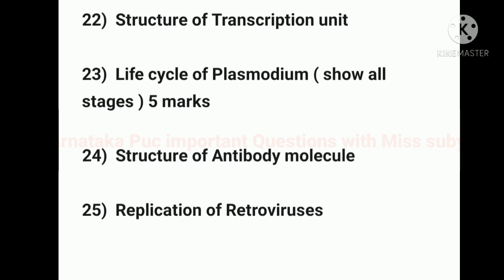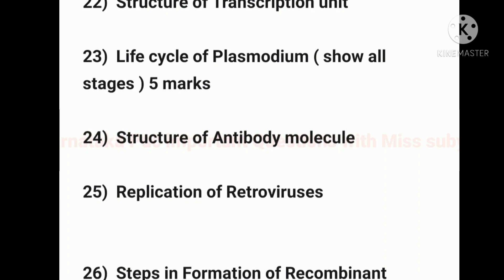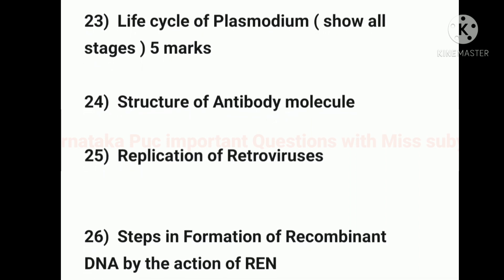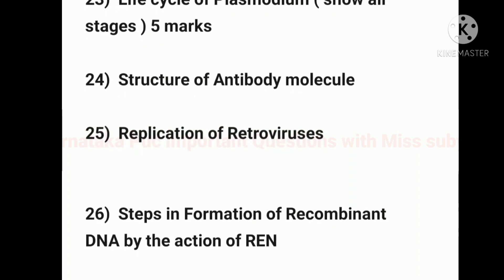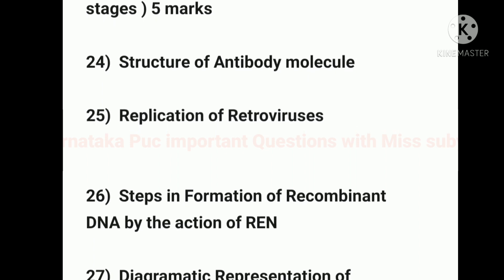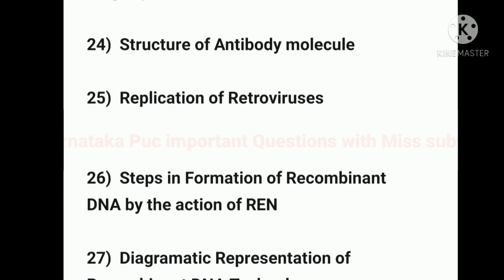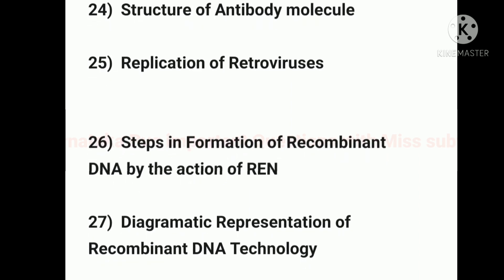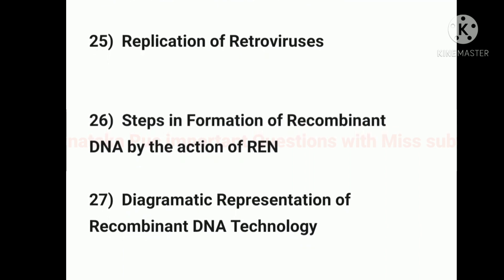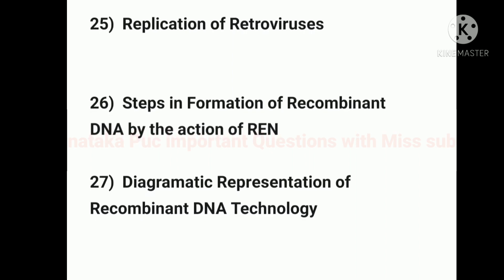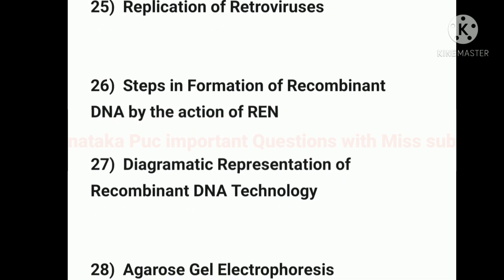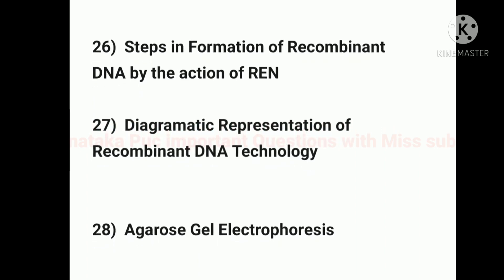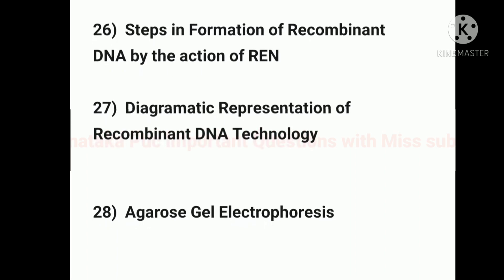Next, life cycle of Plasmodium — you should show all stages for 5 marks. Next, structure of antibody molecule. Next, replication of retroviruses. Next, steps in formation of recombinant DNA by the action of restriction enzymes. Next, diagrammatic representation of recombinant DNA technology is also important.